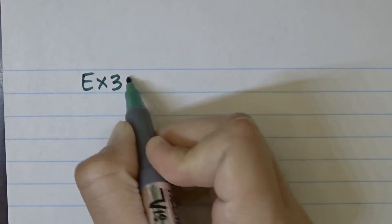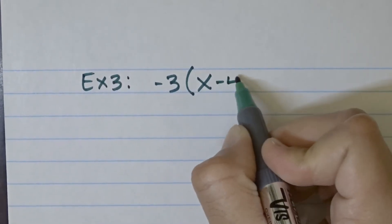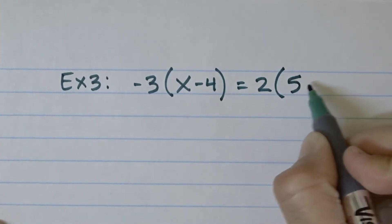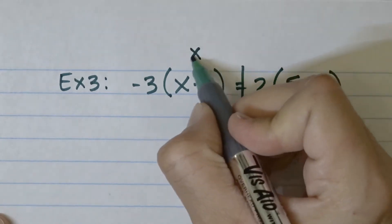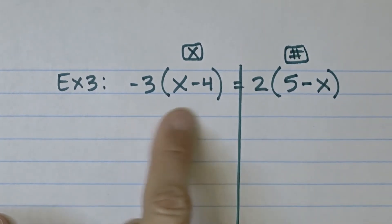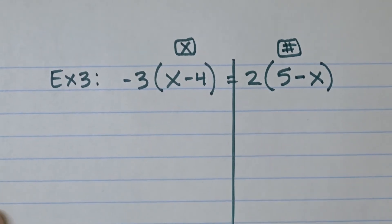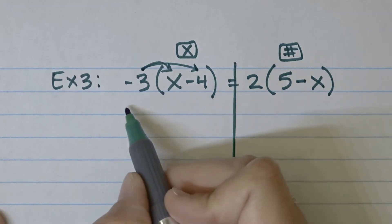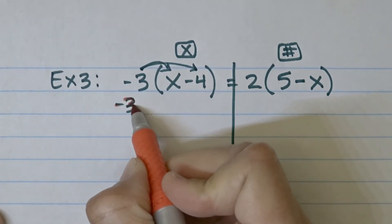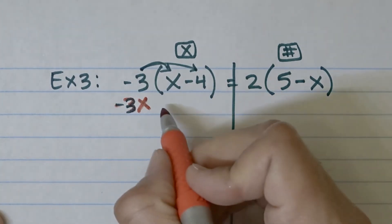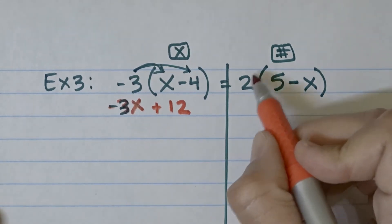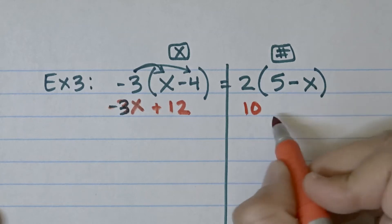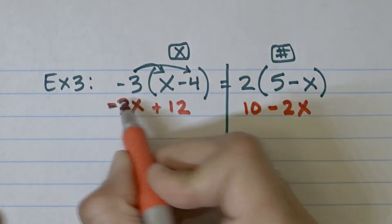Example 3 introduces parentheses: negative 3 times (x minus 4) equals 2 times (5 minus x). The first step is to eliminate the parentheses using the distributive property. Negative 3 times x is negative 3x, and negative 3 times negative 4 is positive 12. On the right, 2 times 5 is 10, and 2 times negative x is negative 2x. The new, simpler equation is: negative 3x plus 12 equals 10 minus 2x.